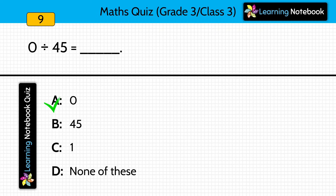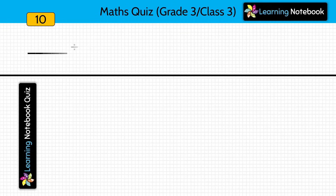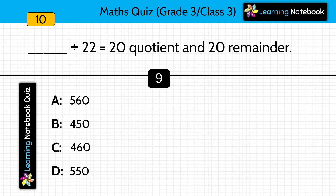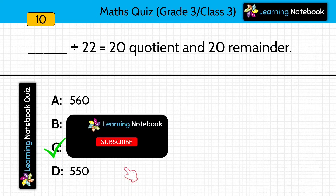Answer is 0. Question ten: blank divided by 22 equals quotient 20 and remainder 20. What should be the number which on division by 22 gives quotient 20 and remainder 20? Answer is 460.